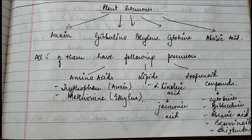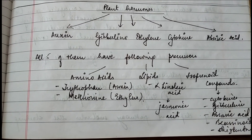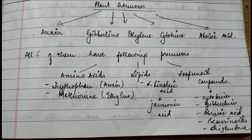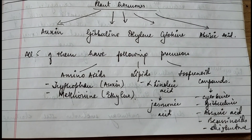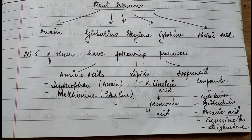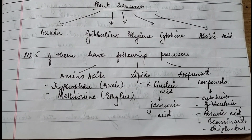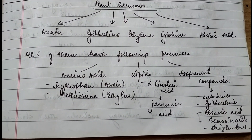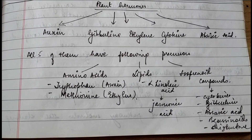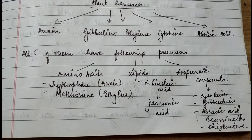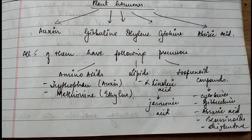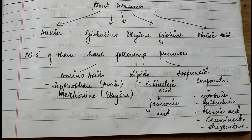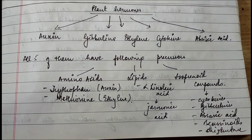Lipids are the precursor of linoleic acid, and isoprenoid compounds are the precursors of cytokinins, gibberellins, abscisic acid, brassinoids, etc. You need to keep in mind all these basic things because they act as precursors — meaning the starting material from which the hormones are formed.